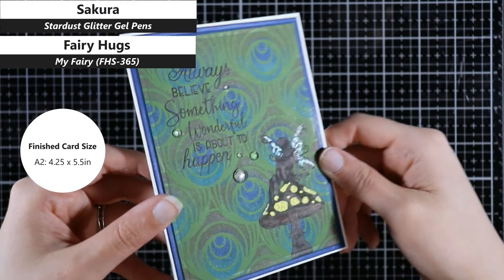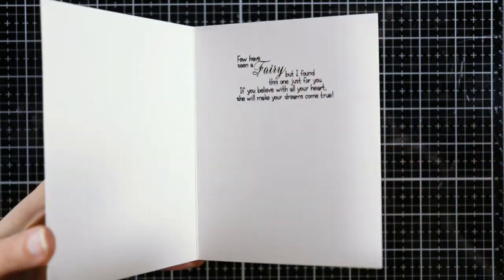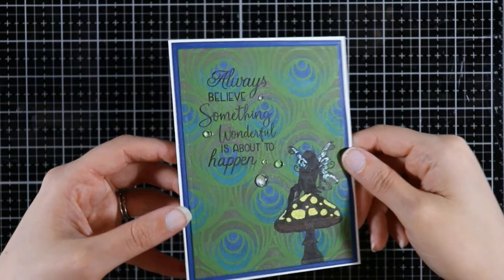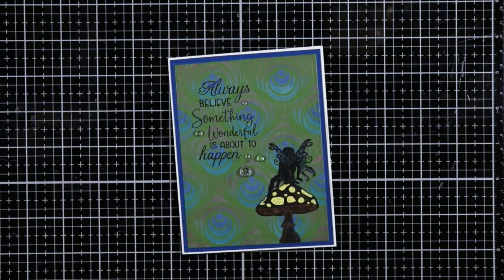Then you can see where I just showed you that the fairy was nice and dark and then the mushroom did not. It still had where you could see the oxide shining through. So I just went and took an Inktense pencil and found a color brown that matched the Pinecone color and covered that up.